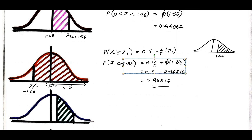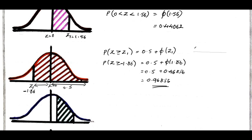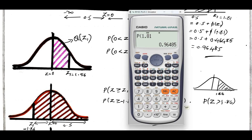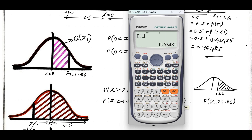But theoretically, you need to write down at least this much, then directly give the answer. I can also find the area of z greater than 1.86. You can make use of the formula R, that is 3, then R of 1.86, and you are going to get the answer as 0.031443.